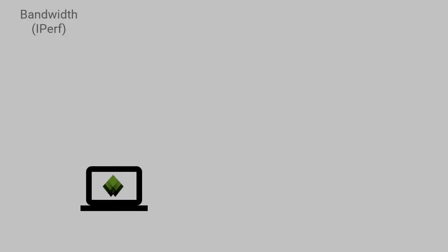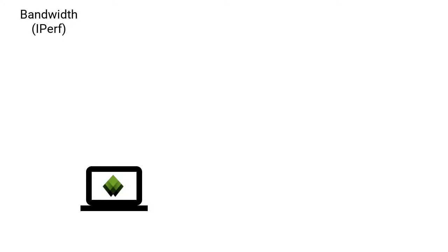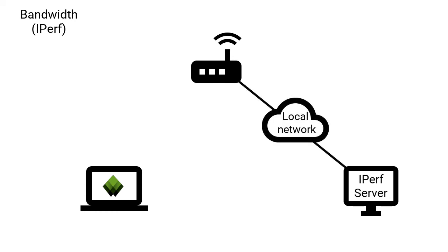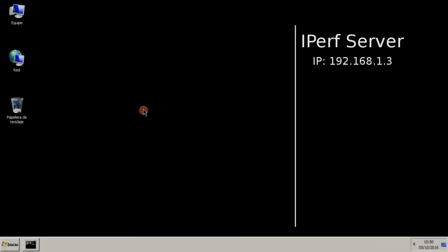iPerf is a software specially designed to measure network bandwidth. In order to use it, it is necessary to configure an iPerf server on a computer connected to the same Wi-Fi network. The device running Acrylic Wi-Fi connects to this server and measures its bandwidth during the site survey. This is the recommended method, since it is more reliable than downloading a file. In the Acrylic installation folder, there is a subfolder called iPerf that contains a copy of this software.